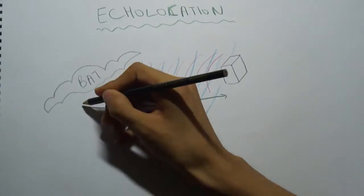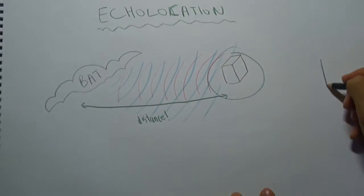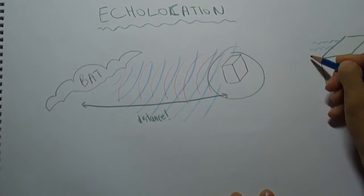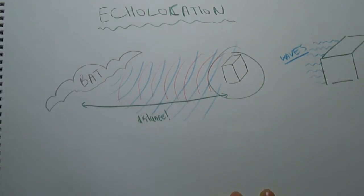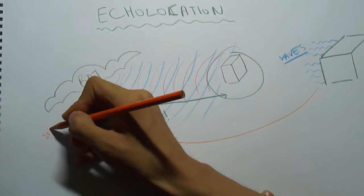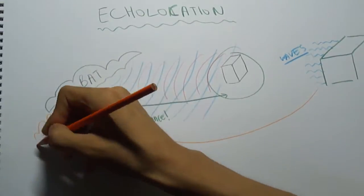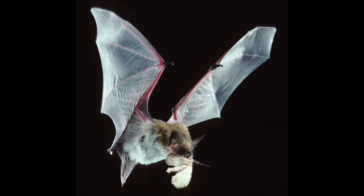The bat can then determine how far away the object is. Other than the distance, they can also use echolocation to determine things such as texture, shape, and size of the object. This helps them locate their prey and decipher the objects around them.